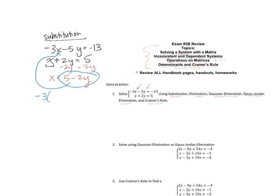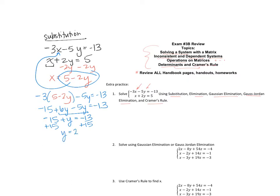Substituting into the first equation: negative 3 times (5 minus 2y) minus 5y equals negative 13. That's negative 15 plus 6y minus 5y equals negative 13. Combining like terms: negative 15 plus y equals negative 13. Adding 15 to both sides gives y equals 2. Then plugging back in: x equals 5 minus 2 times 2, so x equals 5 minus 4, which equals 1. So x equals 1 and y equals 2 is our solution.